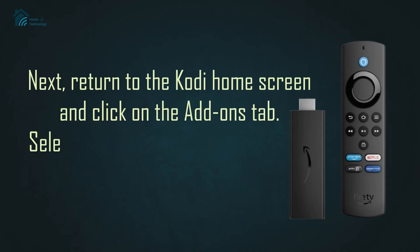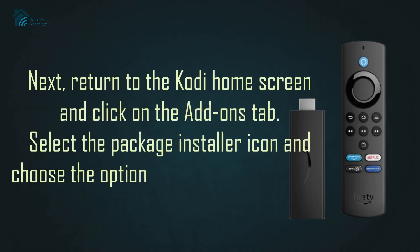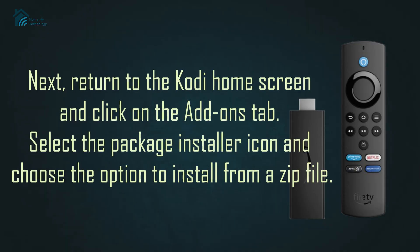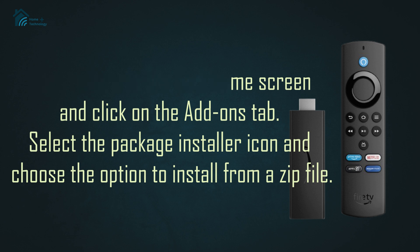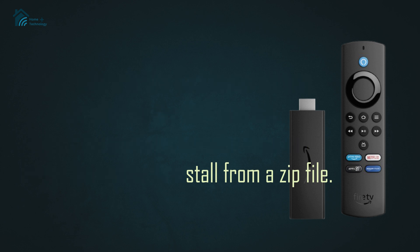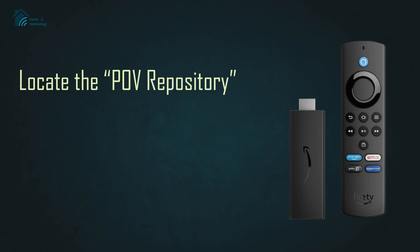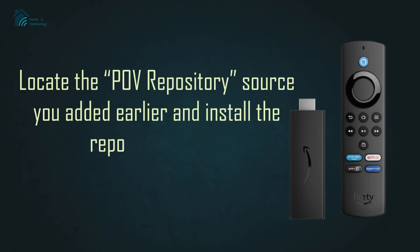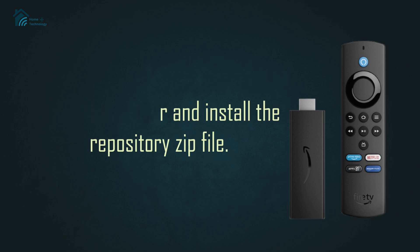Next, return to the Kodi home screen and click on the add-ons tab. Select the package installer icon and choose the option to install from a zip file. Locate the POV repository source you added earlier and install the repository zip file.